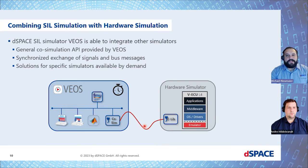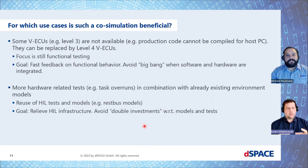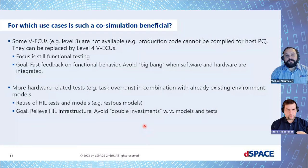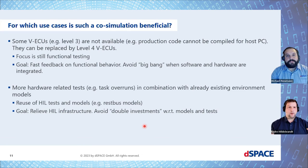For which use cases does it make sense to combine these two approaches? There are a lot of different use cases. The first one: consider you already have some Level 3 virtual ECUs, but there is one virtual ECU you cannot virtualize — because you don't have access to the code, you cannot remove the hardware dependencies, or it's developed for a different architecture like ARM. Then you can replace that one with a Level 4 virtual ECU. The focus is still functional testing of the whole network, and you can still get fast feedback on functional behavior.